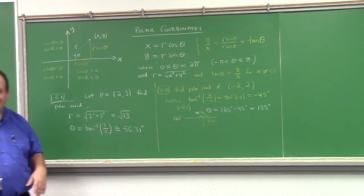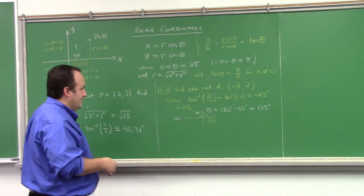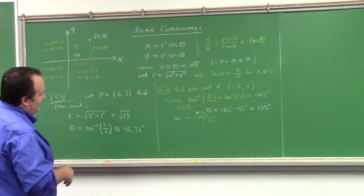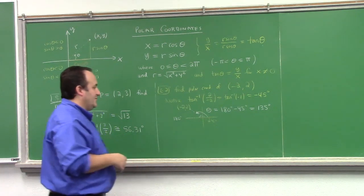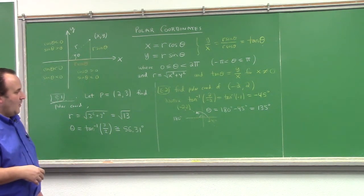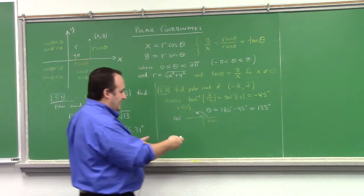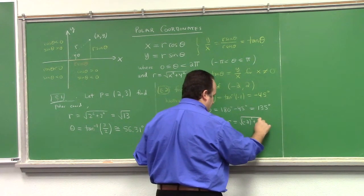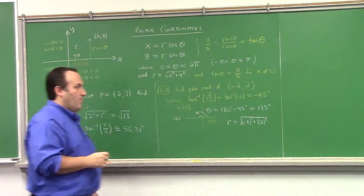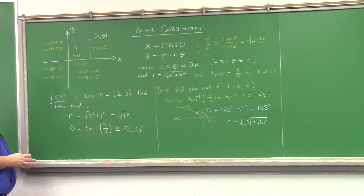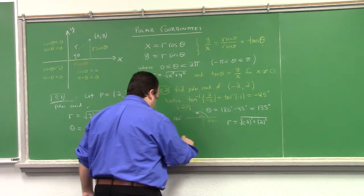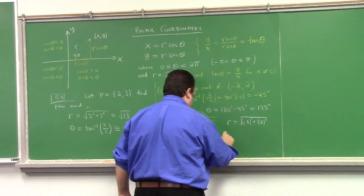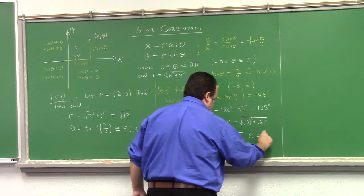For quadrant three, you have to add 180 degrees to the inverse tangent result. In quadrant two the inverse tangent gives you a false angle in quadrant four, and in quadrant three it projects you to quadrant one, so you correct by adding 180. The radius for (-2, 2) is the square root of (-2)² plus 2², which is the square root of 8. So the polar coordinates are R equals root 8, theta equals 135 degrees.